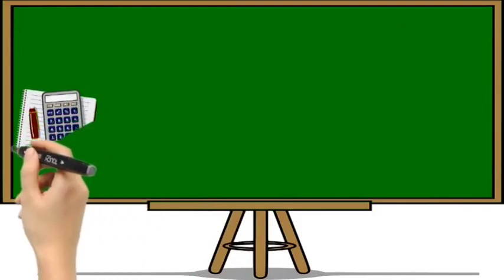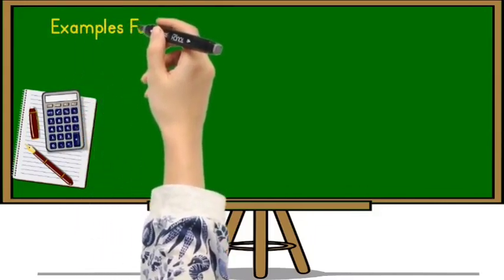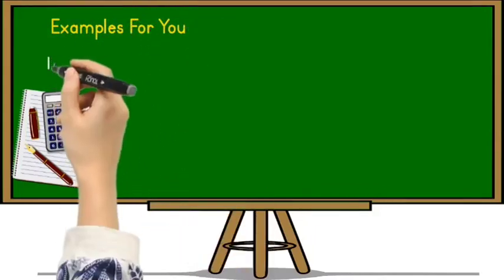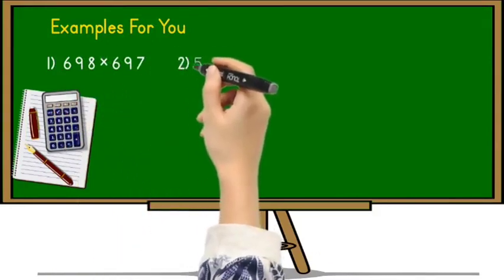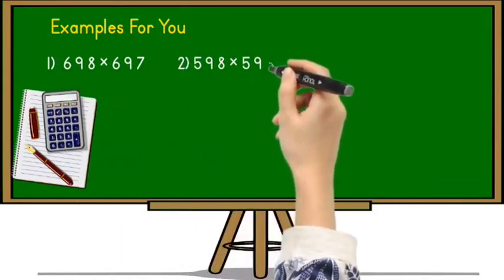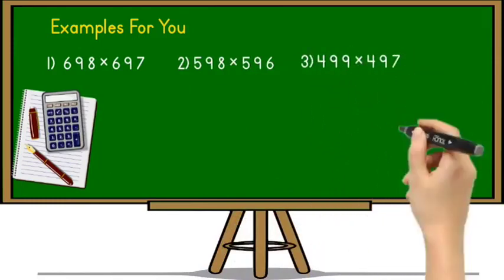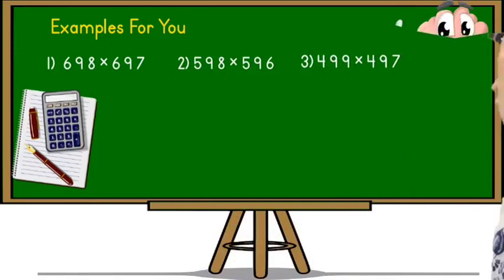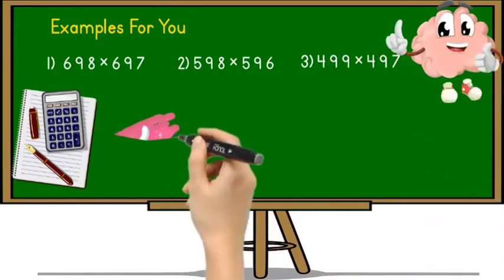In this way you can solve any example for multiplication of two or three digit number whose base is same by using this technique. Some examples for you. First one is 698 multiply by 697. Second one is 598 multiply by 596. Third one is 499 multiply by 497. So solve this example by using Vedic math technique which I have taught in this video.